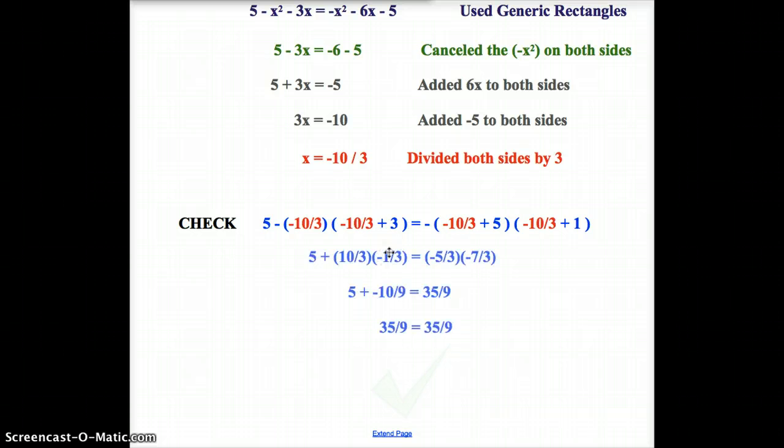I start solving using order of operations. So, the opposite of negative 10 thirds is a positive 10 thirds. Negative 10 thirds plus 3 is negative 1 third. The opposite, well, let's do this part first.